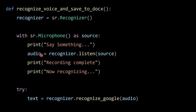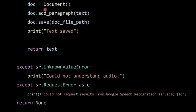It will recognize the speech and save it in an audio variable, then show 'recording complete'. We use a try-except method: in the try section, text is equal to recognizer.recognize_google(audio), which sends the audio to Google for recognition. Then I'm calling doc = Document(), doc.add_paragraph(text), doc.save(doc_file_path), and printing 'text saved' — this means the speech is recognized and saved in the doc file, then return text.